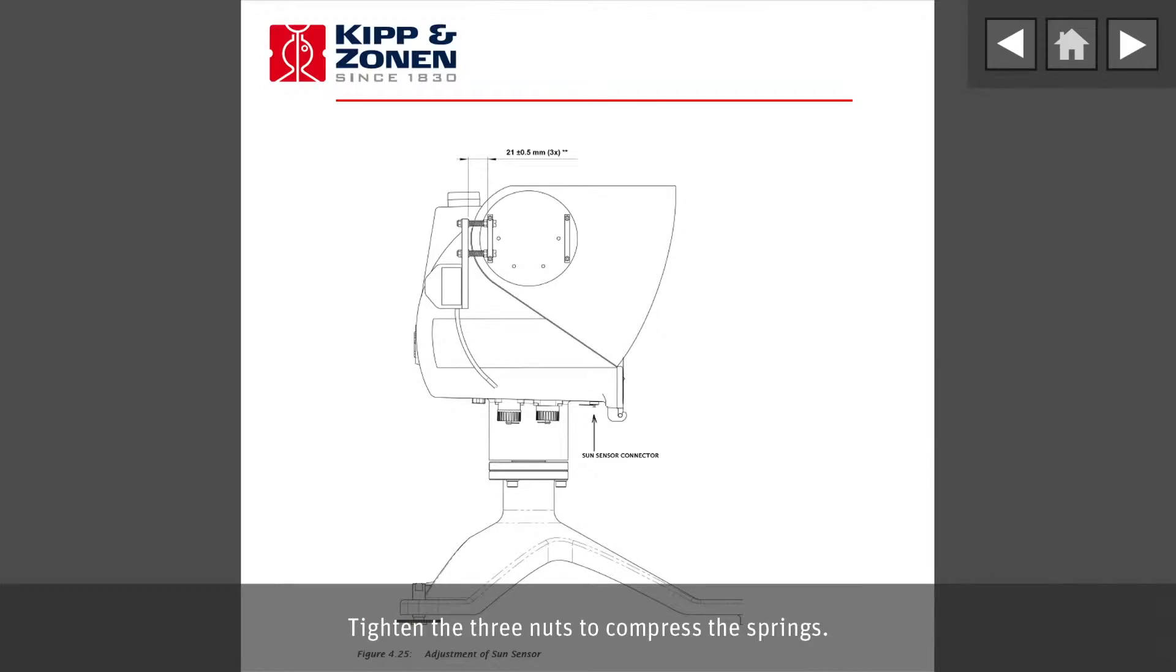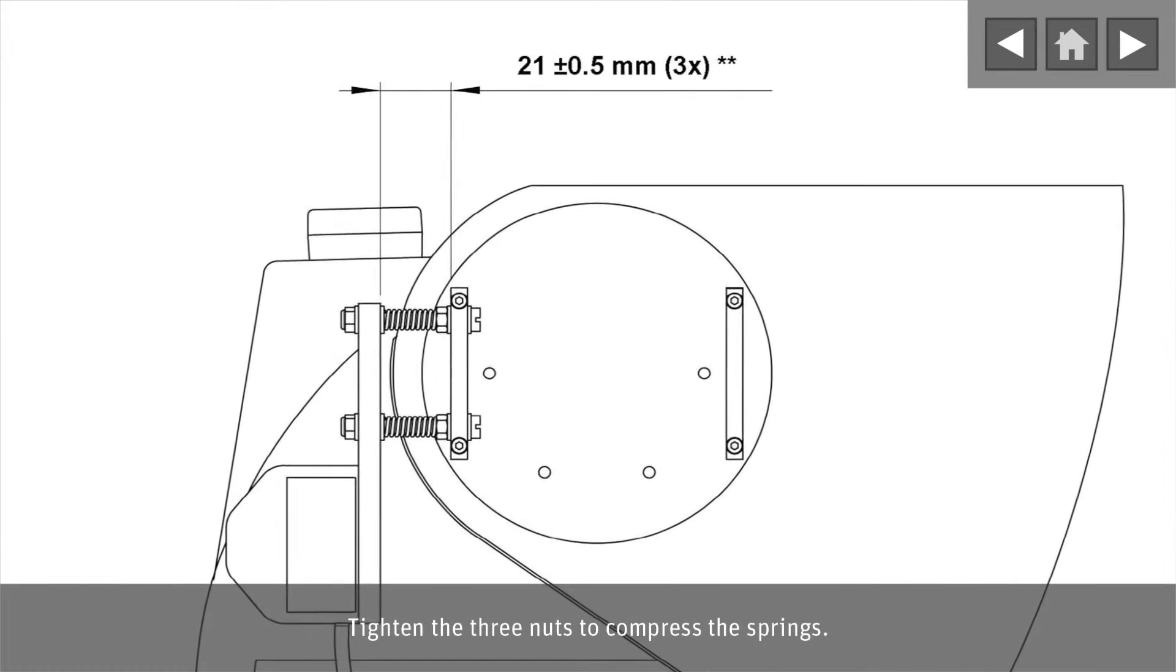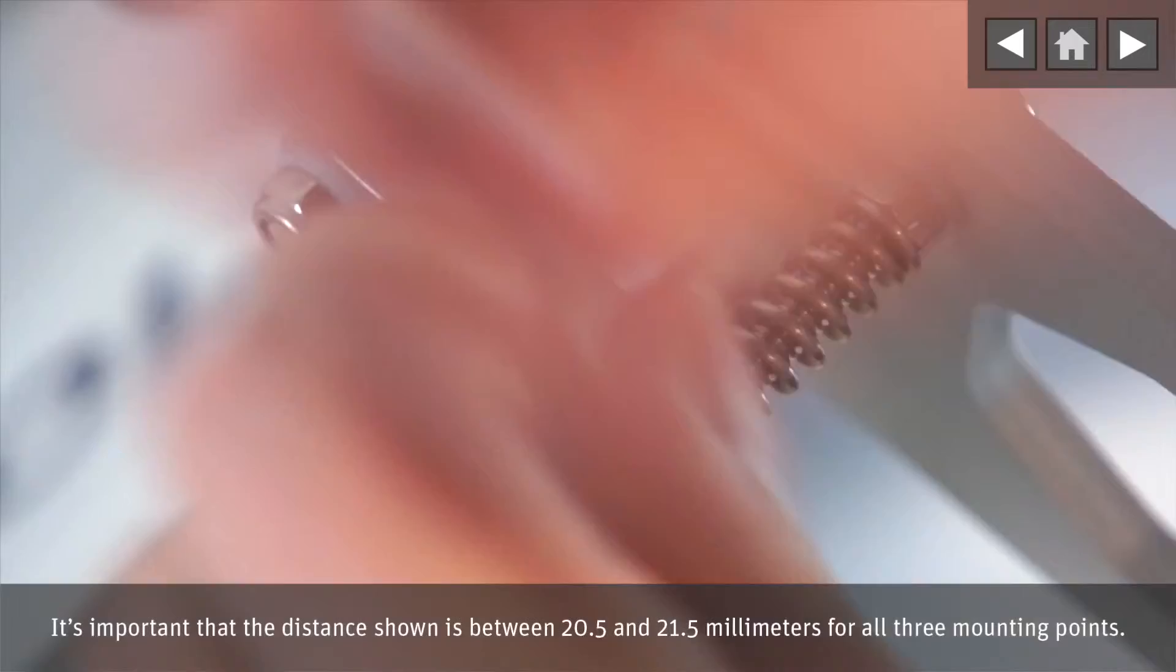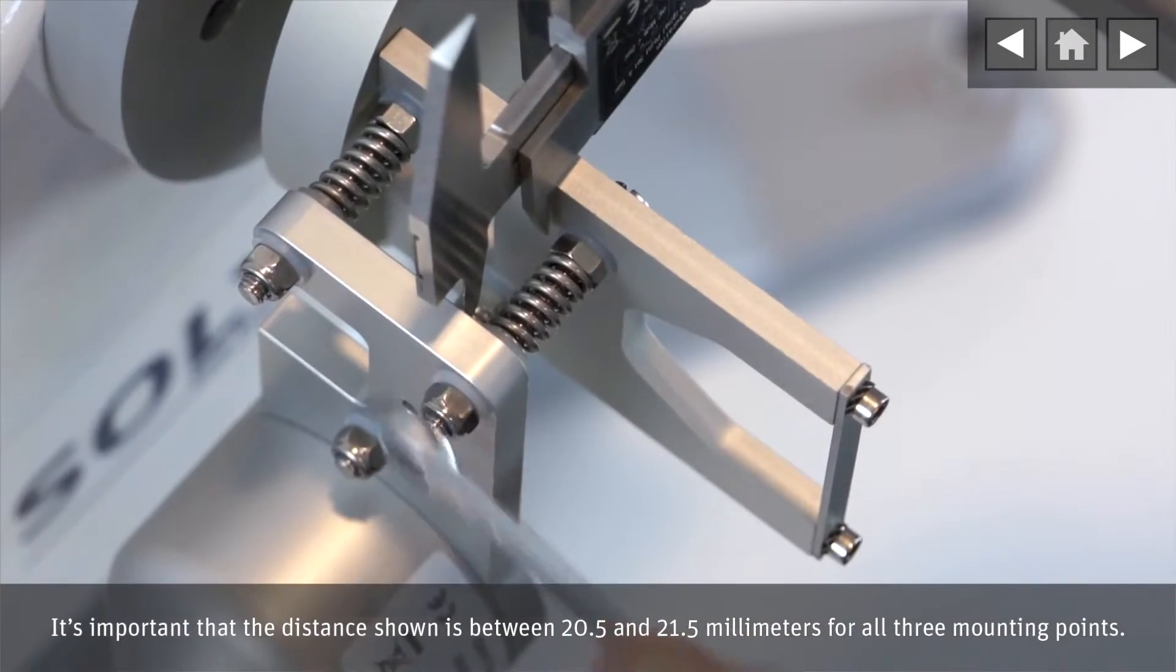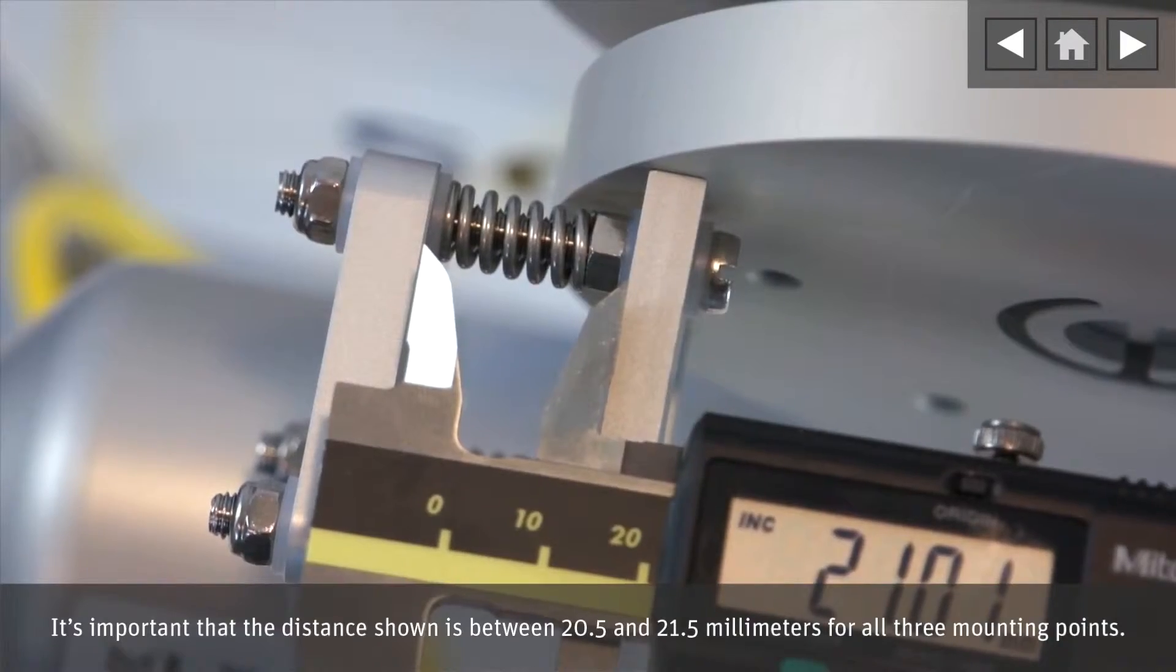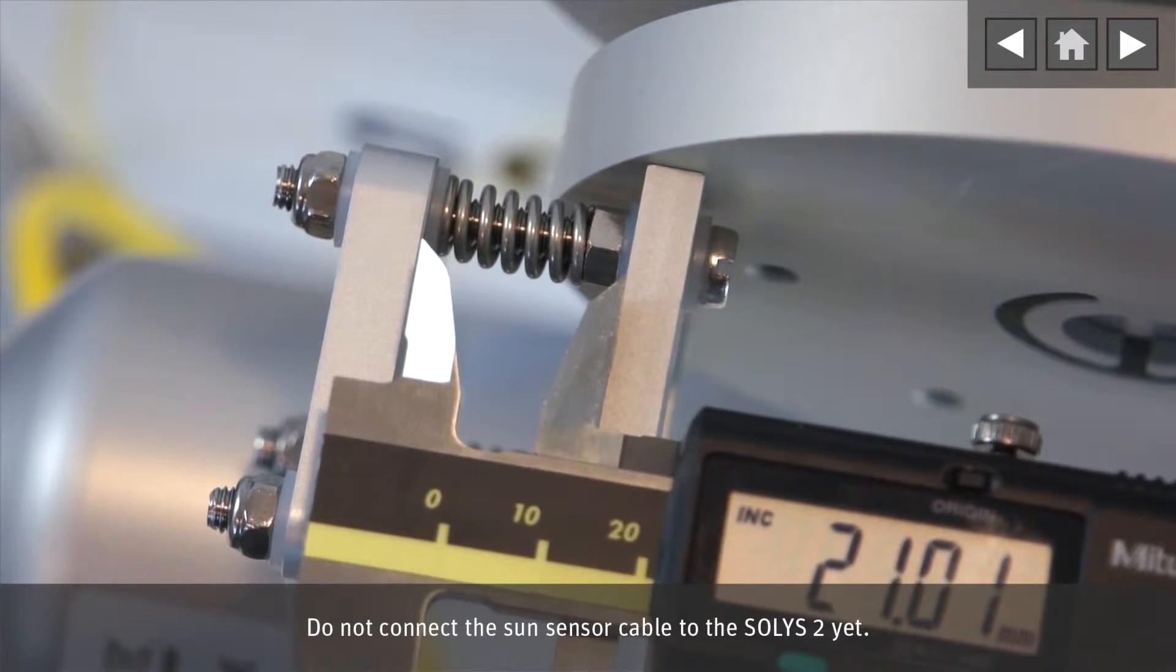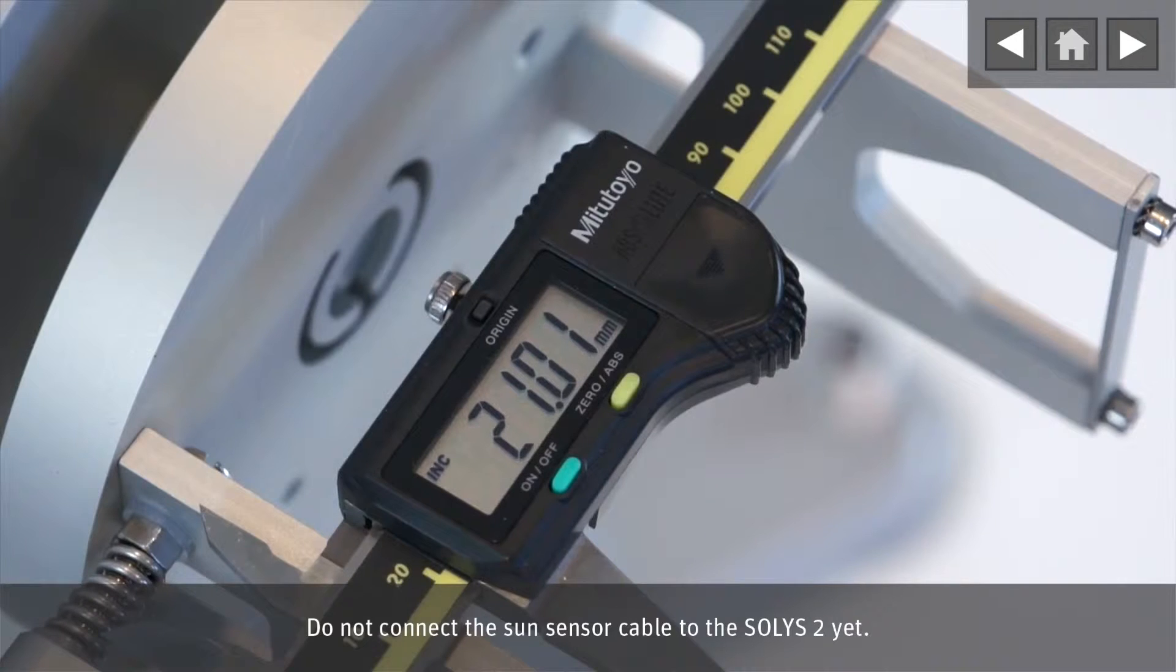Tighten the three nuts to compress the springs. It is important that the distance shown is between 20.5 and 21.5 mm for all three mounting points. Do not connect the Sun sensor cable to the SOLUS 2 yet.